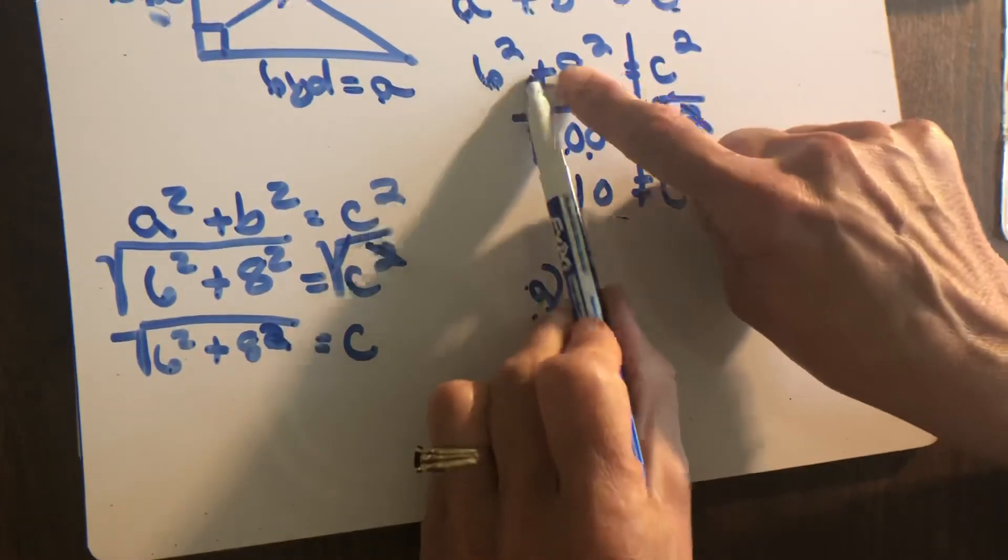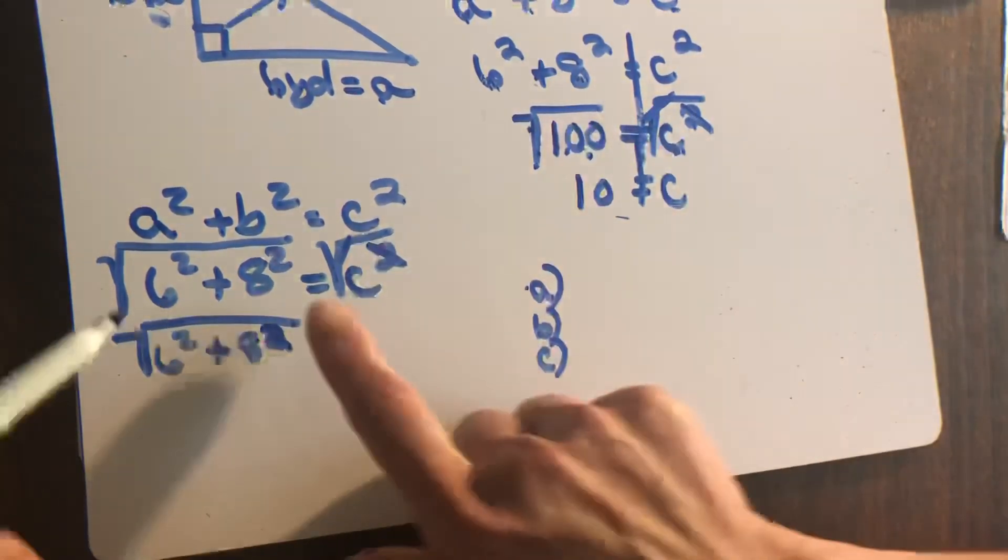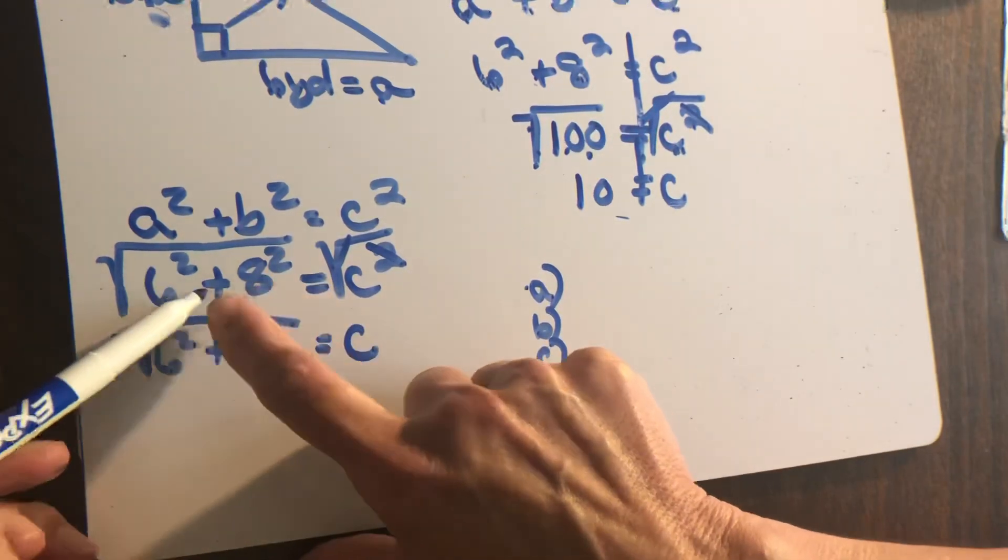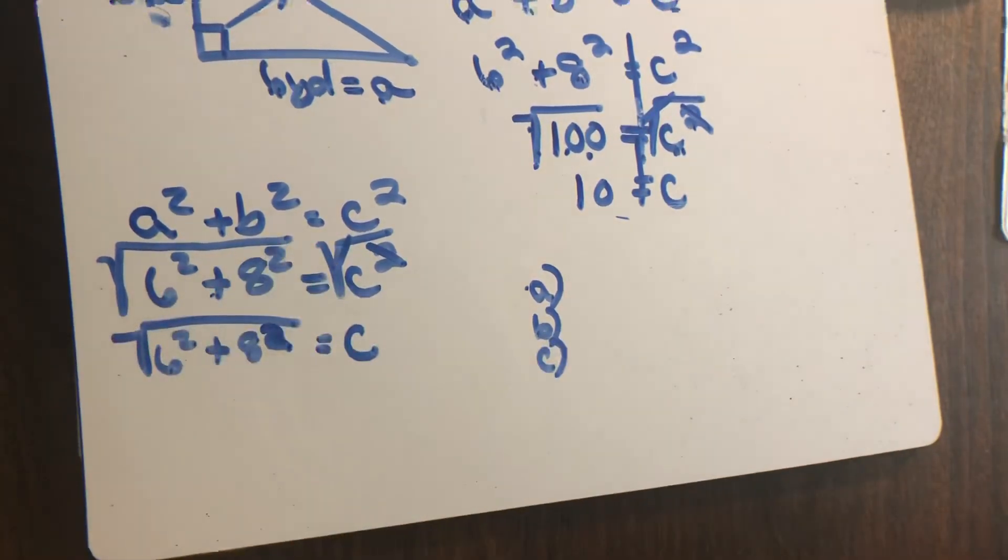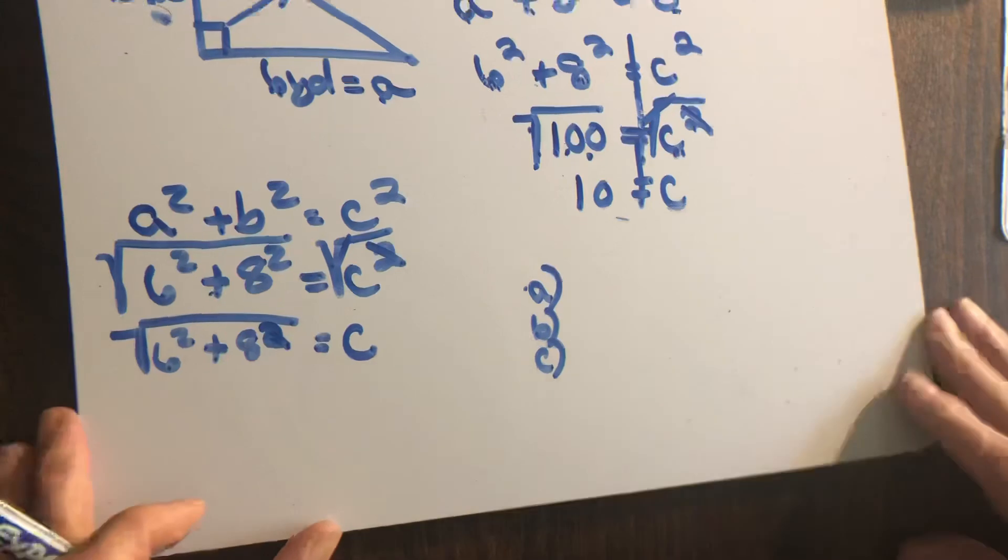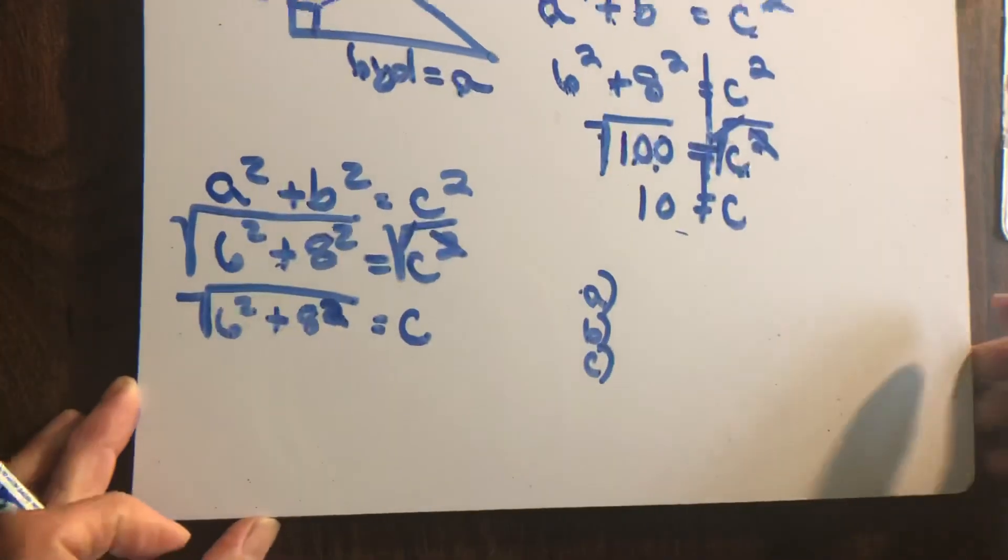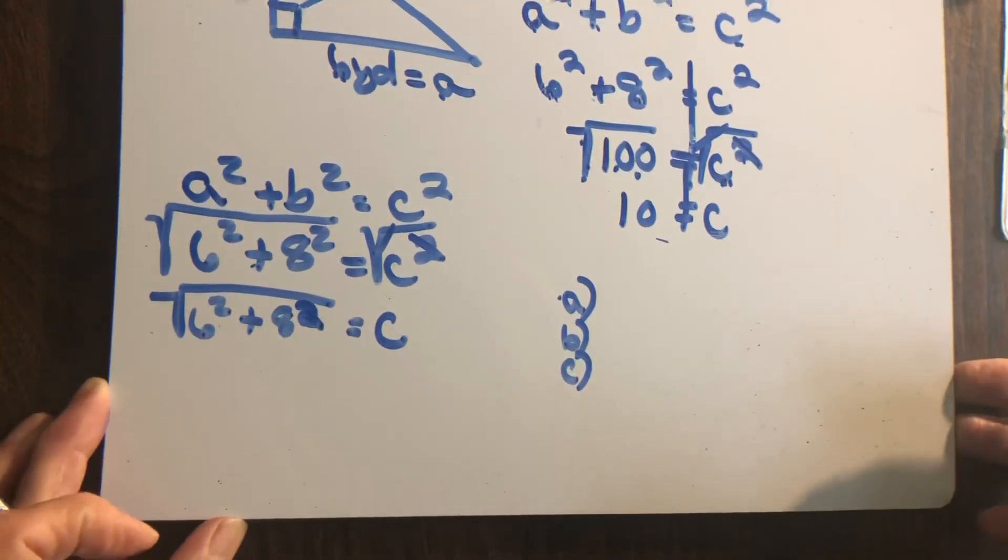What did we do over here? We squared it, added it together, then took the square root. What are you doing over here? You're squaring it, adding it together, then taking the square root. In the next video we'll work some other problems looking for A and B.